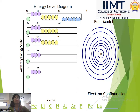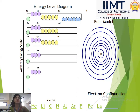Whenever an electron revolves, it revolves in a well-defined circular orbit, such as the K circular orbit. Second, these circular orbits are known as energy levels, energy shells, designated as K, L, M, N, and so on.